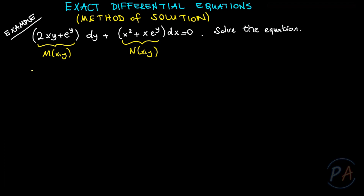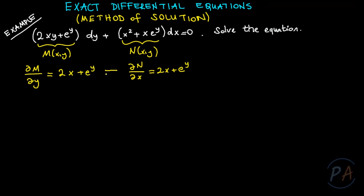Let me write the partial derivatives. The partial derivative of M with respect to y equals 2x plus e^y. We see that both partial derivatives are equal to each other, so the equation is exact. Since this equation is exact, it must have a solution f(x,y) = c, where c is a constant.